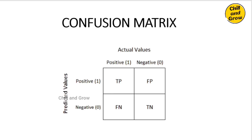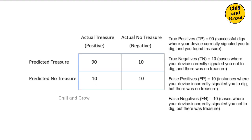Next is the Confusion Matrix — this is a very important evaluation matrix. Using the confusion matrix, we can visualize how the model is performing and identify where it makes correct and incorrect predictions. The matrix has actual values on one axis and predicted values on the other, with four cells: True Positive, False Positive, False Negative, and True Negative.